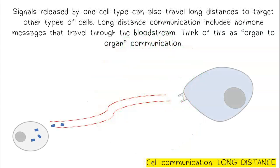Signals released by one cell type can also travel long distances to target other types of cells. Long distance communication includes hormone messages that travel through the bloodstream. Think of this as organ-to-organ communication.